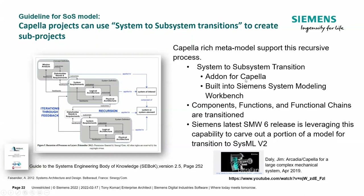How this is supported: as an add-on to Capella, it's built into our Siemens System Modeling Workbench. It transitions components, functions, and functional chains when you do this. As you saw in my system of systems example, I was using a functional chain to highlight the flow through the model — and it will actually transition that functional chain information when you do the system-to-system transition. In our latest capability with the Siemens System Modeling Workbench, we're actually able to transition out content so we can carve out a portion of a model and make it into a SysML v2 representation.